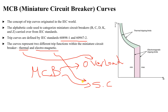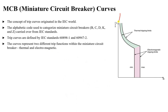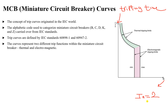If you look at any trip curve, the Y-axis represents the tripping time — the time required for the circuit breaker to trip the electric circuit. On the X-axis we have In, which is a multiplier of the current. In means how much our current is with respect to the rated current. For example, if In equals 2, our current is 2 times the rated current; if In equals 3, it is 3 times the rated current.